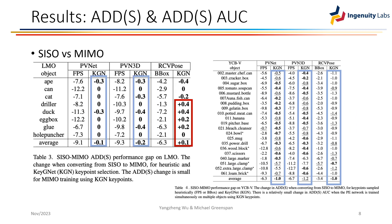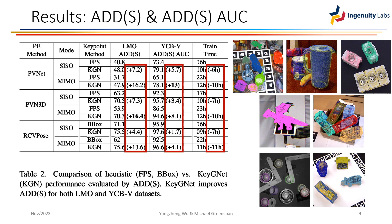By using Key-GNet keypoints, RCB-Pose performance on LM occlusion is even improved in MIMO mode compared to SISO mode. The enhancement in performance remains consistent when assessed using the ADDS and ADDS-AUC metrics. It is worth noting that with the incorporation of Key-GNet keypoints, these methods exhibit faster convergence in MIMO mode as opposed to SISO mode.